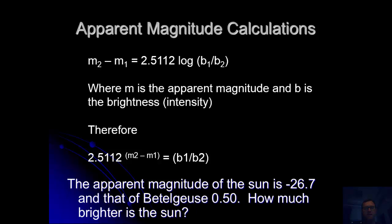Therefore we can work out how much brighter one object is than the other. So if the apparent magnitude of the sun is minus 26.7 compared to that of Betelgeuse which is only 0.5, we can work out how much brighter the sun is. If you put those numbers in...